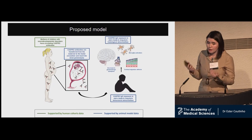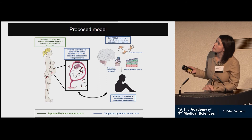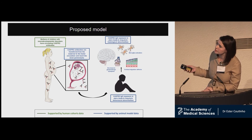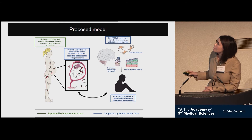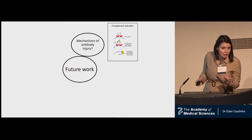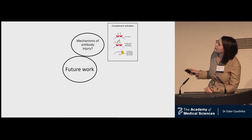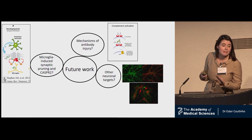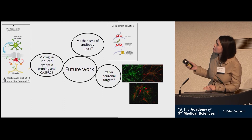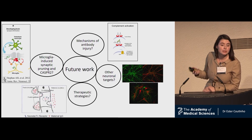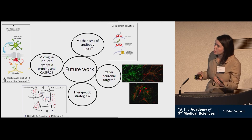Our findings support a model in which mothers of children with neurodevelopmental disorders have circulating antibodies — in this case CASPR2 antibodies — that when they reach the fetus during gestation can lead to long-term behavioral and histological abnormalities. There are still many questions to address: What are the mechanisms of antibody injury during gestation? What is the role of CASPR2 in microglia-induced synaptic pruning? What about other neuronal targets? From our cohorts, we had samples binding to yet unknown antigenic targets. And can we develop therapeutic strategies to prevent the passage of IgG antibodies to the fetus?